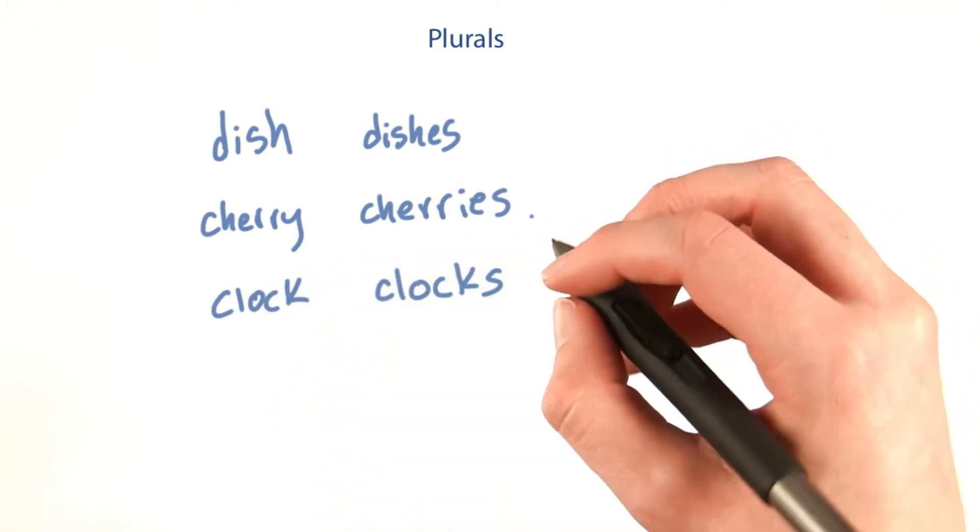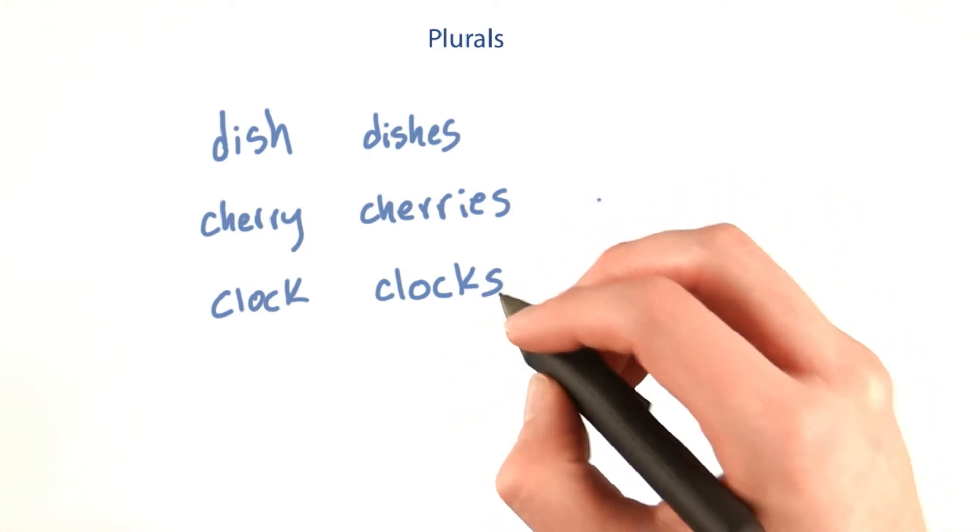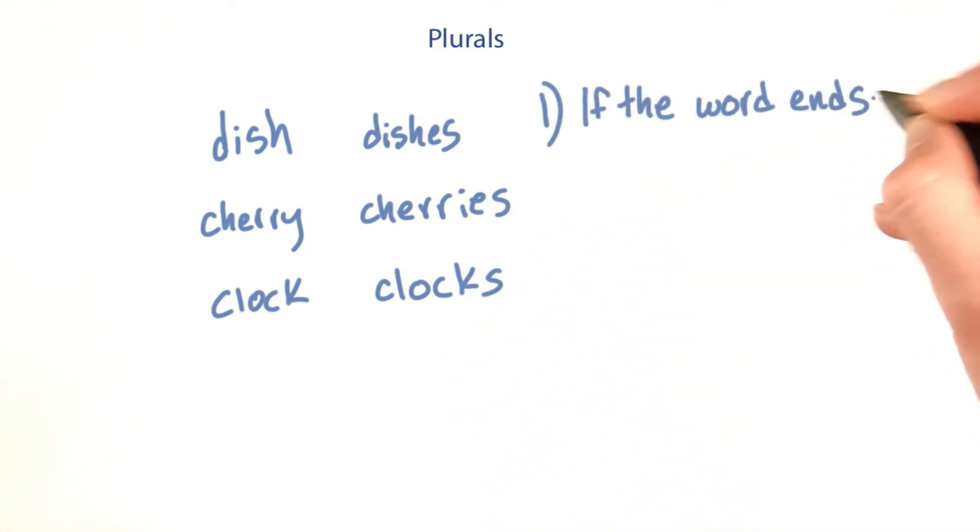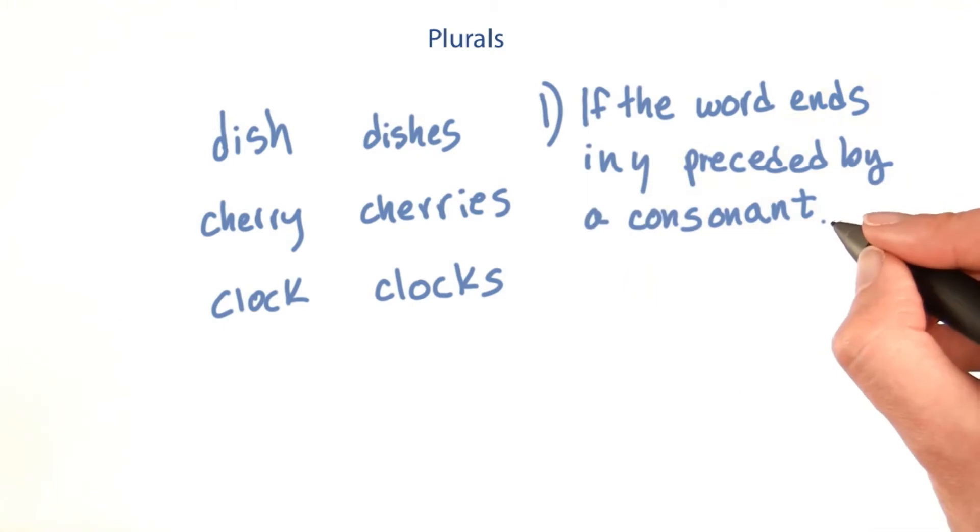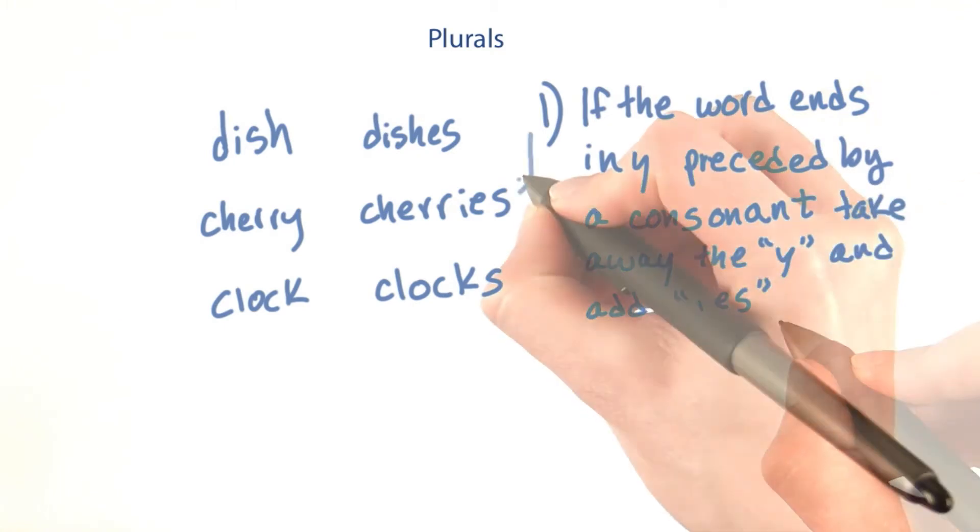Here are the rules I want you to implement for the initial version. If you want to make a more comprehensive version, nothing's stopping you, but get these ones down first. If the word ends in Y preceded by a consonant, take away the Y and add IES, like in cherries.